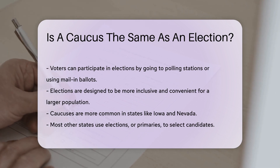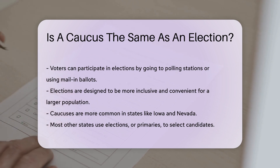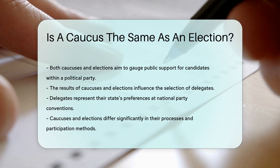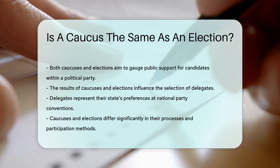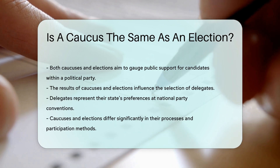Both methods aim to gauge public support for candidates within a political party. The results of caucuses and elections influence the selection of delegates. These delegates then represent their state's preferences at national party conventions.